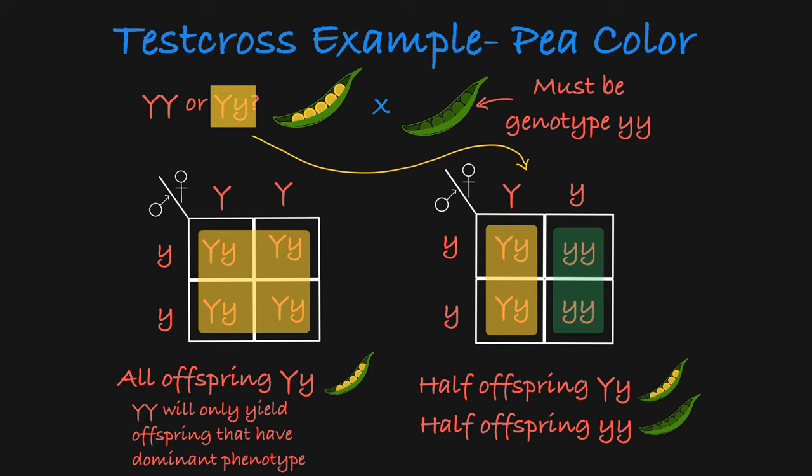Its genotype contains a dominant allele, which makes it have yellow peas, and a recessive allele, which allows it to have green offspring in this cross. It is these two different outcomes that allow you to determine the yellow pea parent genotype.